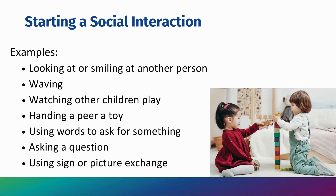Here are some examples of how your child might start a social interaction. Examples could look like looking at someone while they're smiling at you, waving, watching other children play, handing over a toy, using words to ask for something, asking a question, or using sign or picture exchange.